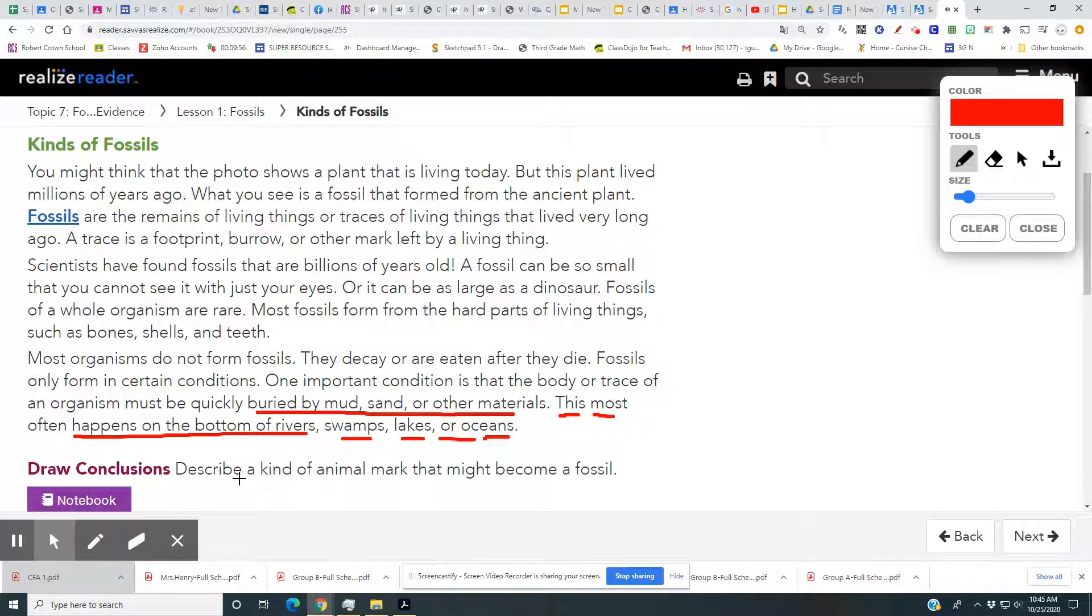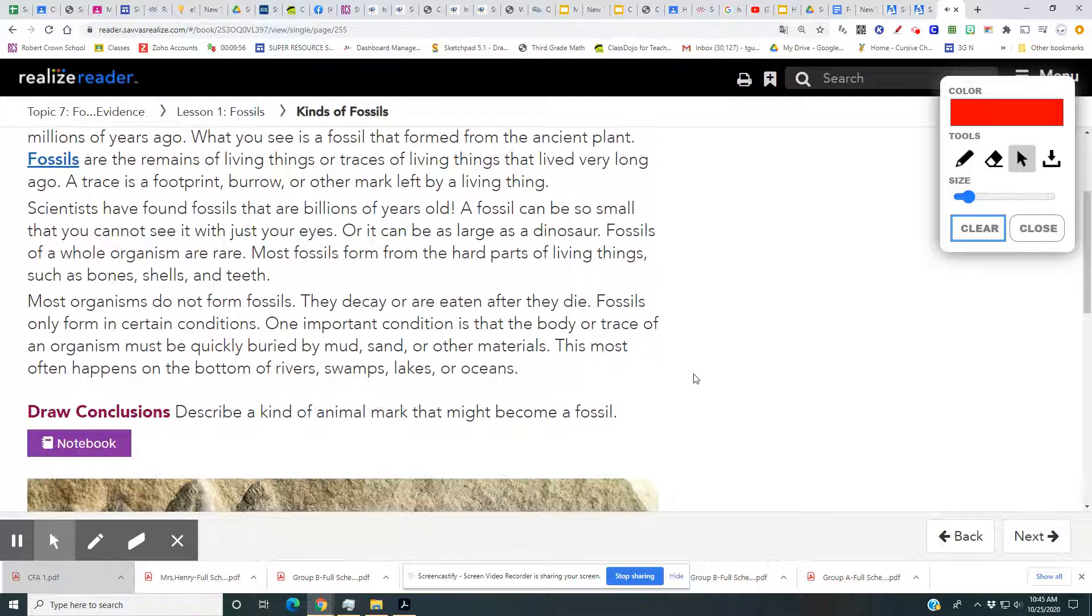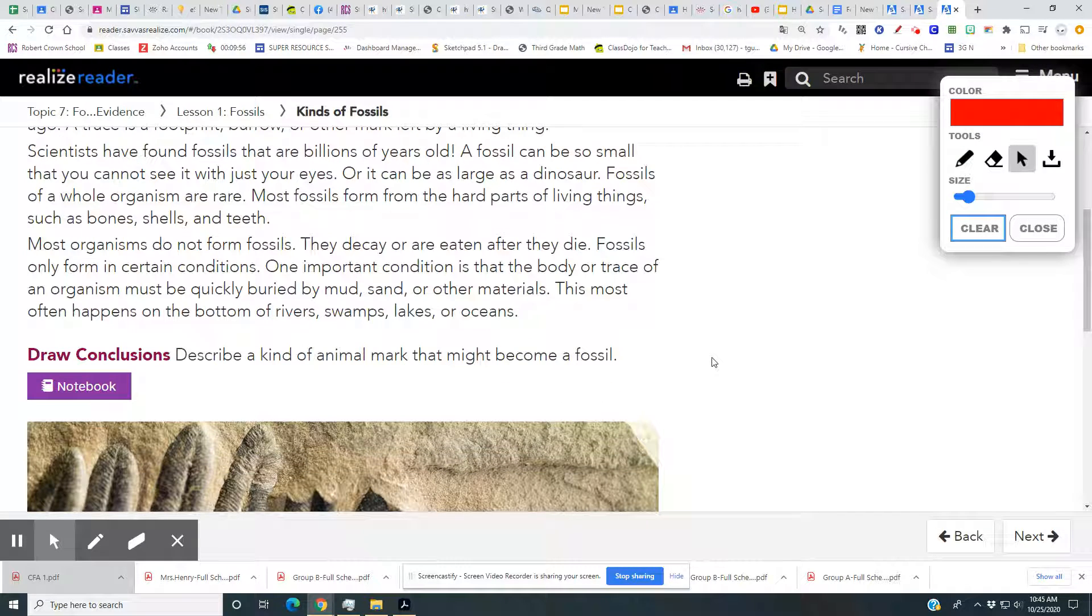Draw conclusions. Describe a kind of animal mark that might become a fossil. Okay, so in your journal, I would like you to go ahead and describe a kind of animal mark that might become a fossil. Think about the evidence in the text.